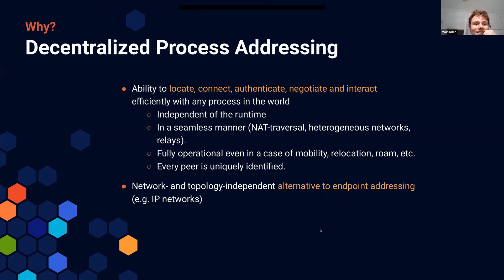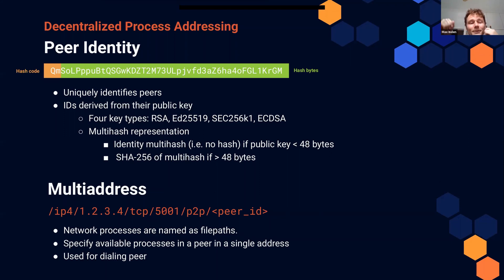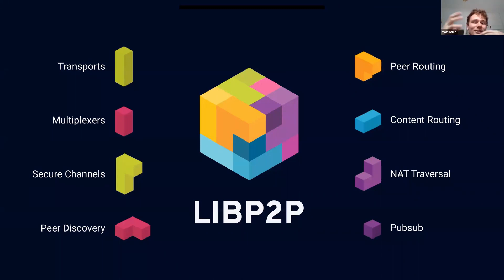That covers the core principles — peer IDs and multi-addresses. We'll come across these often throughout the talk. In our chat example, peer IDs represent the remote peer we want to message, and multi-addresses are where those remote peers are located. Now let's go into the many building blocks around this small core. The cool part about LibP2P is that it's built composably — you can use any transport, any multiplexer, and exchange these building blocks at any point.